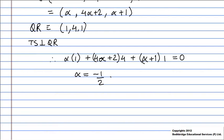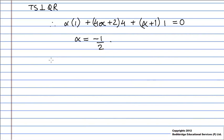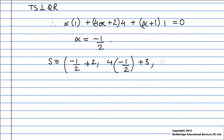So the point S is given by (-1/2 + 2, 4(-1/2) + 3, -1/2 + 5), which is equal to (3/2, 1, 9/2).